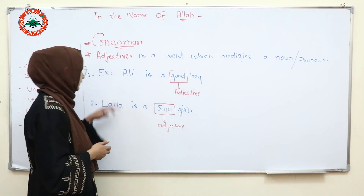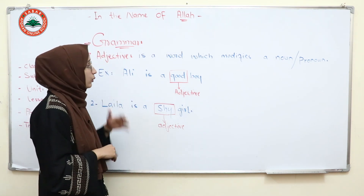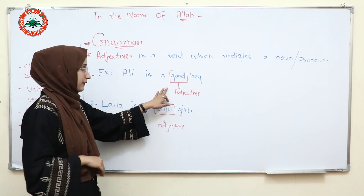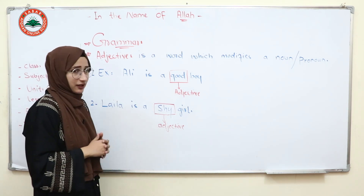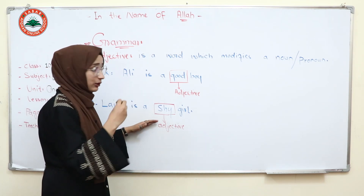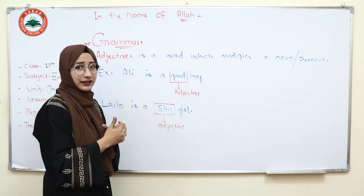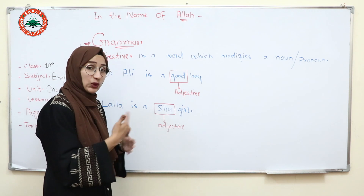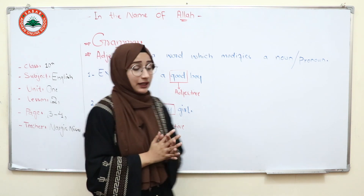Let's work on these examples. The first example is: Ali is a good boy. 'Good' is an adjective. Number two: Layla is a shy girl. 'Shy' is an adjective in this sentence.